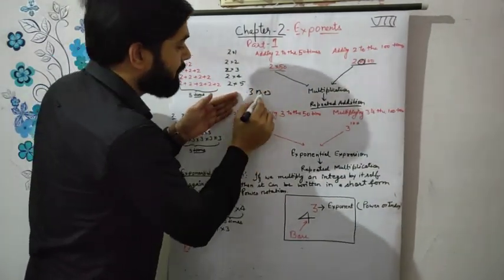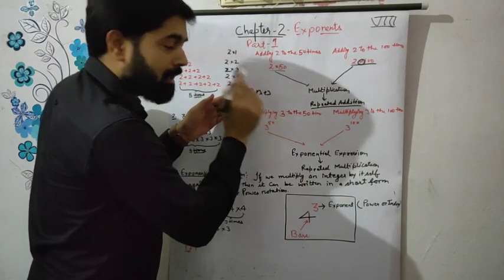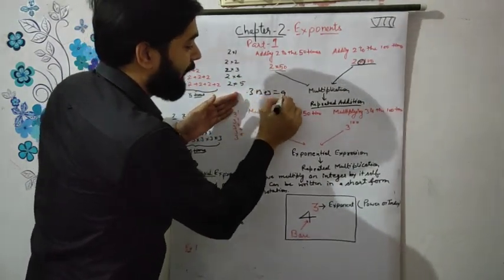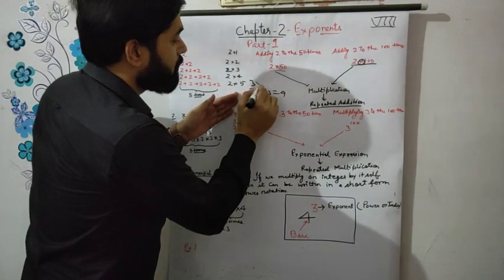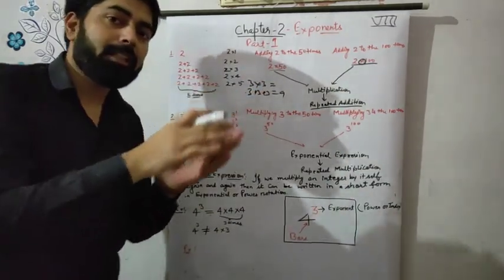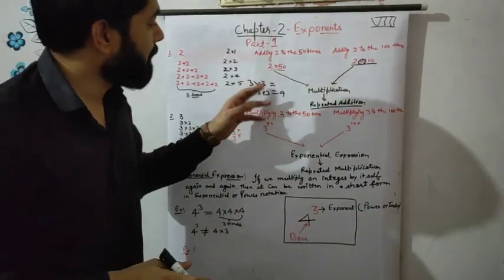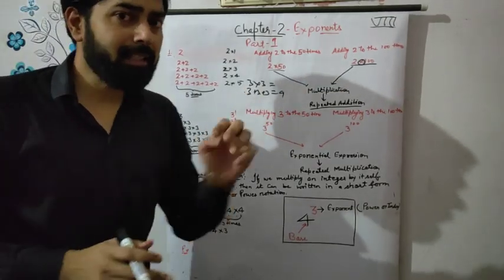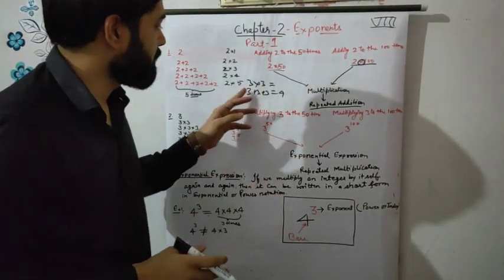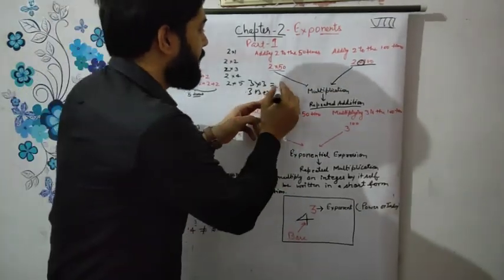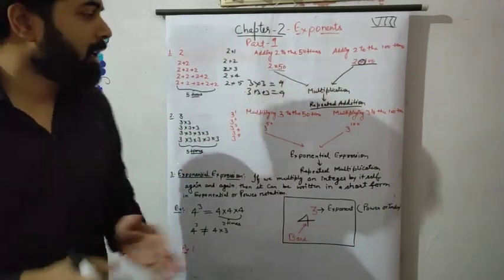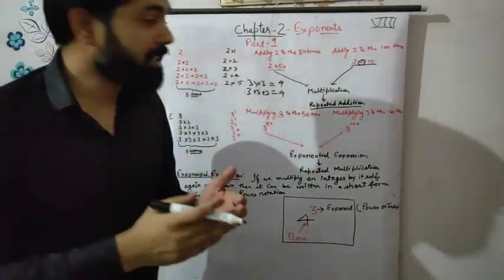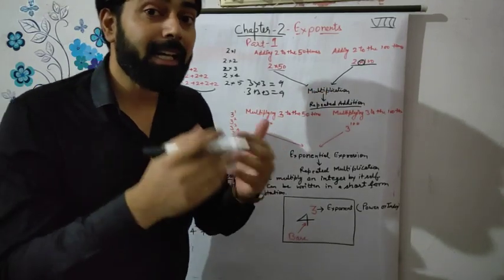For example, 3+3+3 equals 9, and 3×3 also equals 9. Both answers are the same. So multiplication means repeated addition.